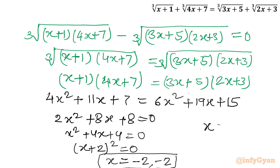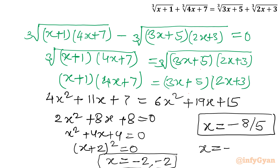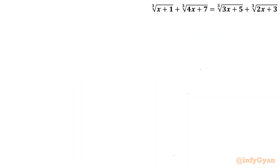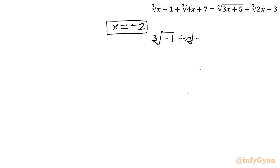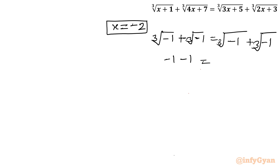Our final solutions are x = −8/5 and x = −2. Let us verify x = −2 first. Substituting: cube root(−2+1) + cube root(4(−2)+7) = cube root(−1) + cube root(−1) = −1+(−1) = −2. And on the right: cube root(3(−2)+5) + cube root(2(−2)+3) = cube root(−1) + cube root(−1) = −2. Both sides are equal, so x = −2 is verified.